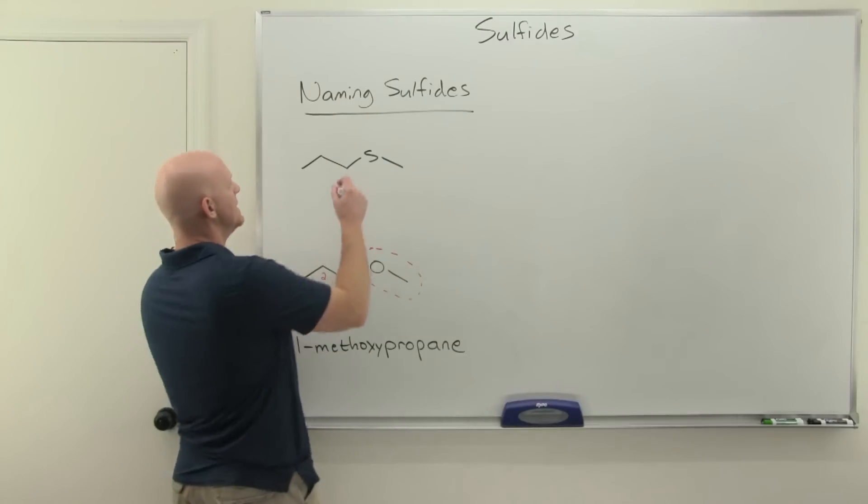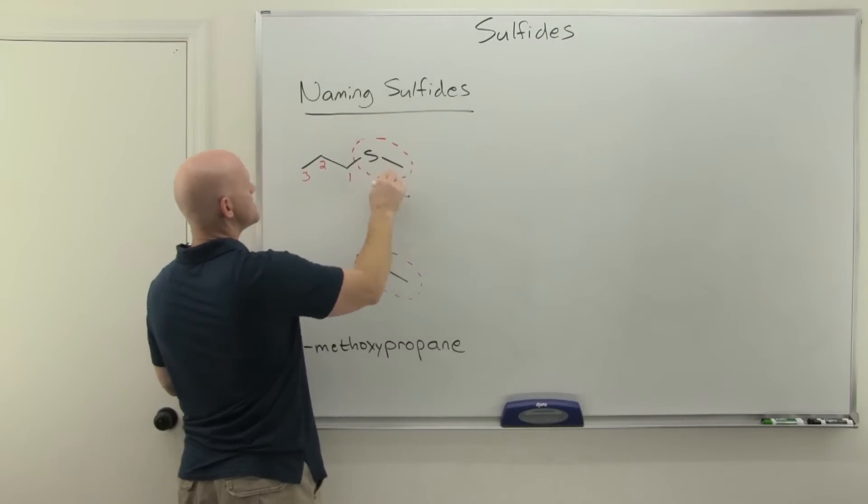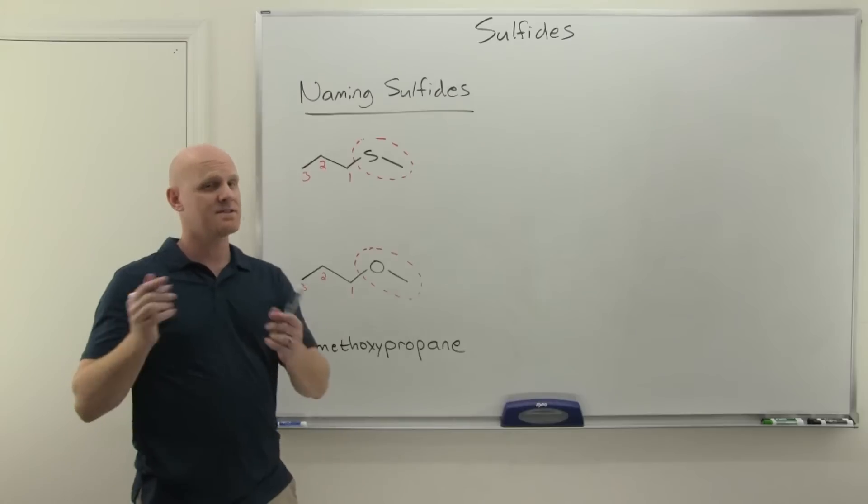Well, you're going to do the same thing here. You're going to get a parent chain here, which will be three carbons, and then the sulfur and the other carbon will be part of a substituent named as a substituent.